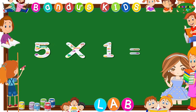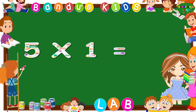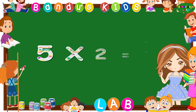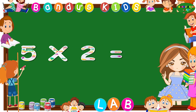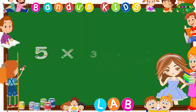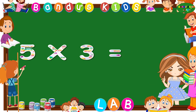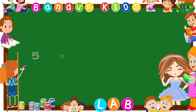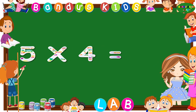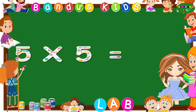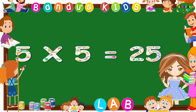Five ones are five. Five twos are ten. Five threes are fifteen. Five fours are twenty.